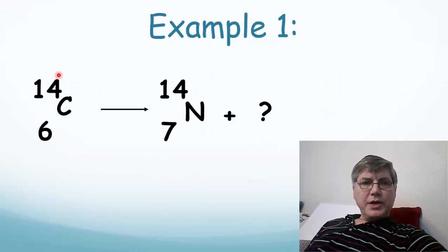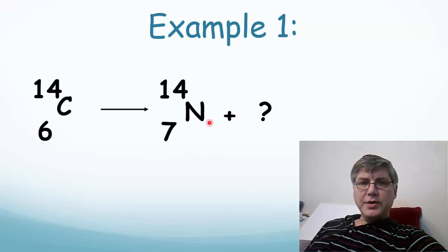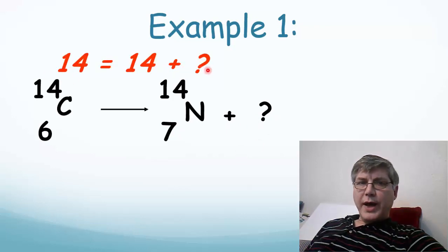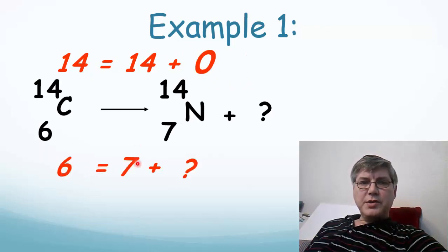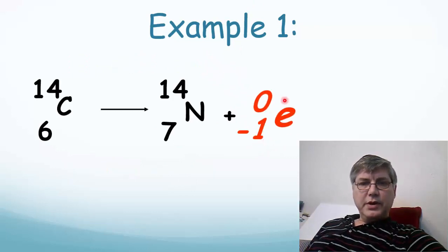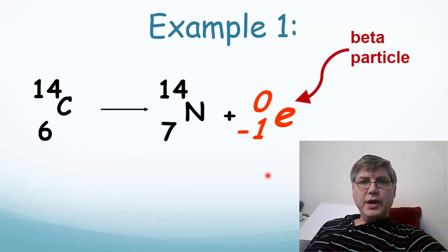So let's try again. In this case, we have 14 over 6 and a C here. This is carbon-14. It decays into nitrogen-14, which has a mass number of 14 and an atomic number of 7. So what goes here? 14 is equal to 14 plus what? That's how we determine what goes on top. Well, 14 is already equal to 14, so this must be a 0. On the bottom, 6 is equal to 7 plus what? Well, it's actually equal to 7 minus 1. So down here would be a minus 1. So if we move these two numbers over so that they are in the place of the question mark, we see that we have 0 over negative 1, and that's an electron. So this is a beta particle.